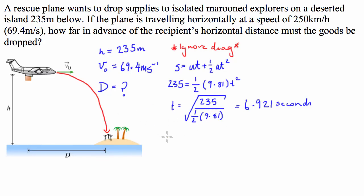So we're going to use the standard distance equals velocity times time, or displacement equals velocity times time, which is equal to 69.4 multiplied by 6.921 seconds. So we can just chuck that straight to the calculator and we get 480.32 meters.